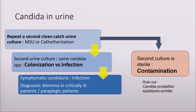Even though the first urine culture is positive, the most important step is to ask for a second urine culture. Should the second urine culture grow the same candida species, then it might be significant if the person is symptomatic. If the second urine culture is negative, then you can quite safely say that could be colonization or contamination, especially when the patient is asymptomatic.